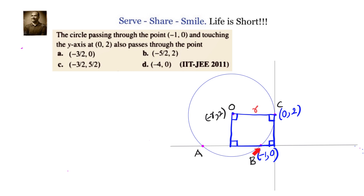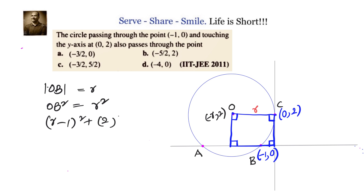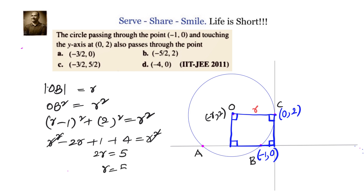We have a point on the circle which is (-1, 0). We find the distance OB and equate it to the radius R. OB² = (-R - (-1))² + (2 - 0)² = (R - 1)² + 4 = R². Expanding: R² - 2R + 1 + 4 = R². Cancelling R², we get 2R = 5, so R = 5/2.